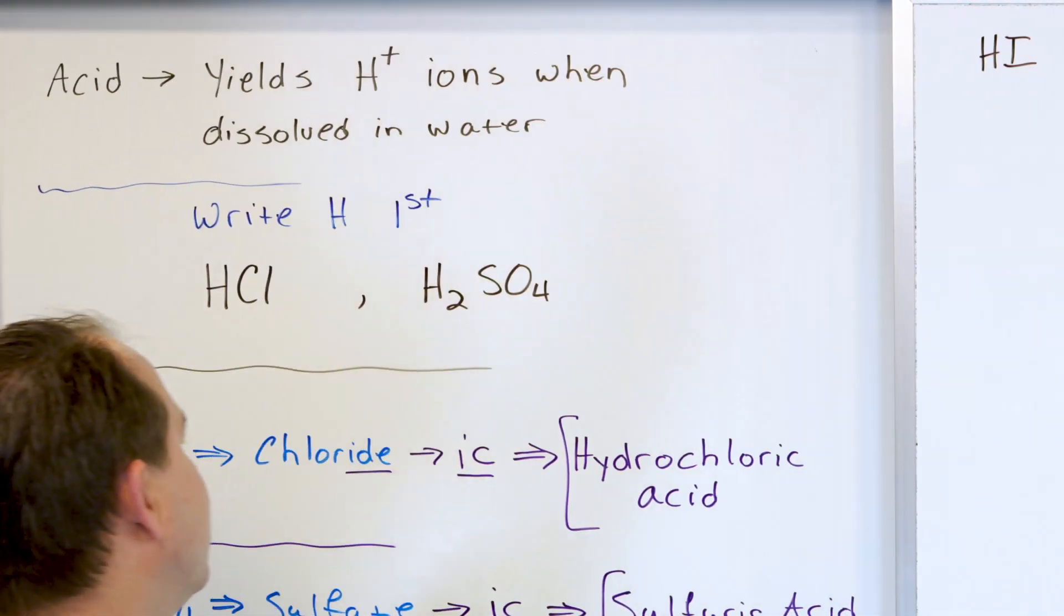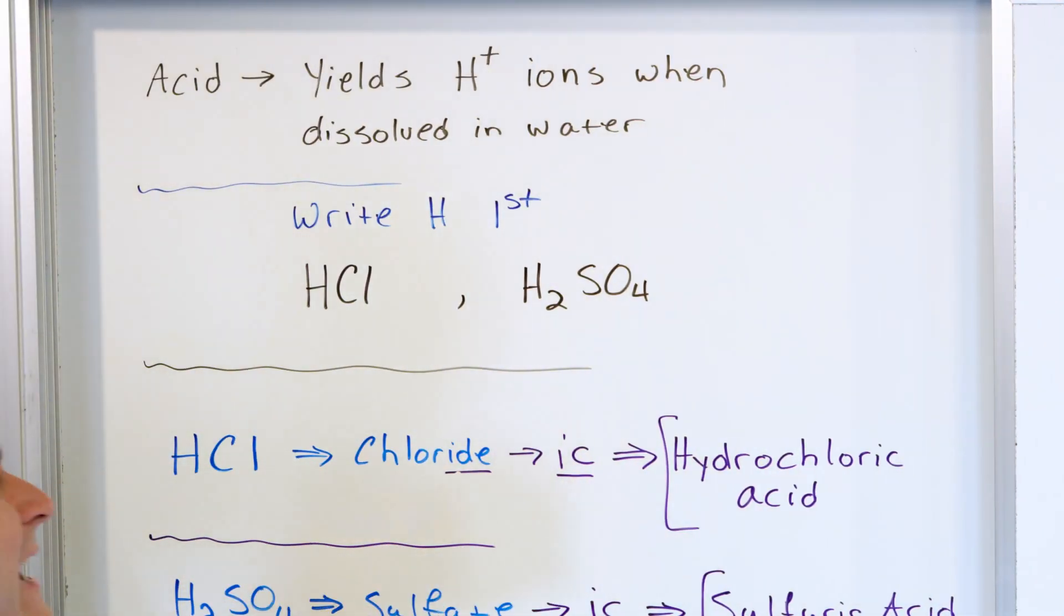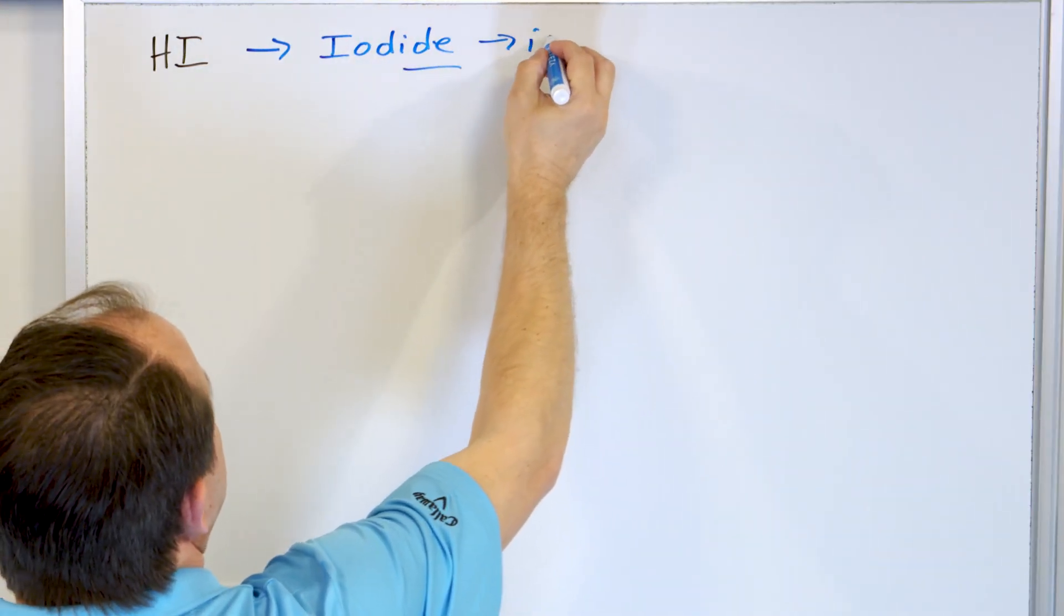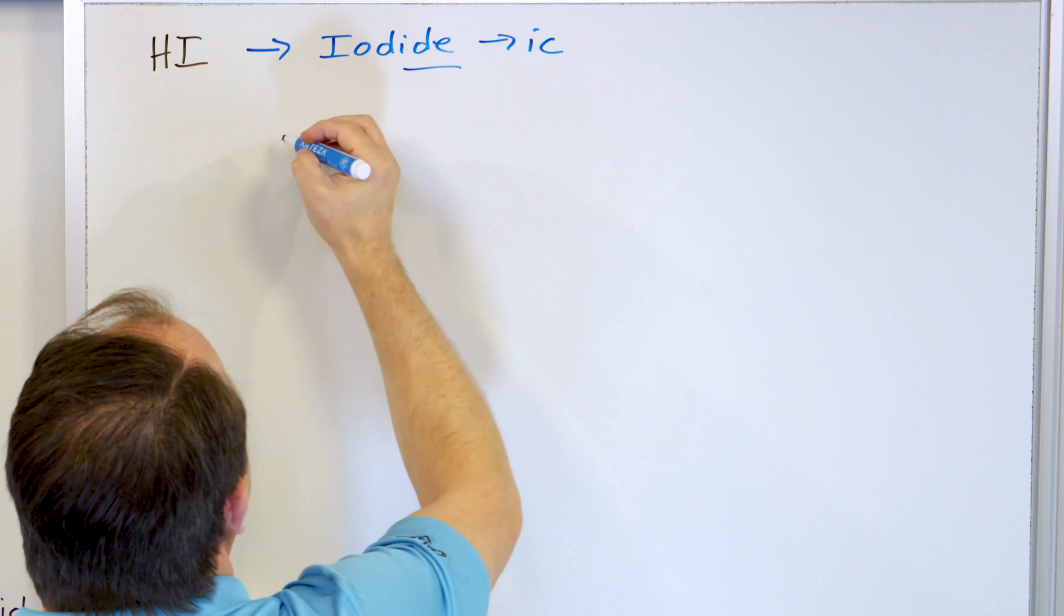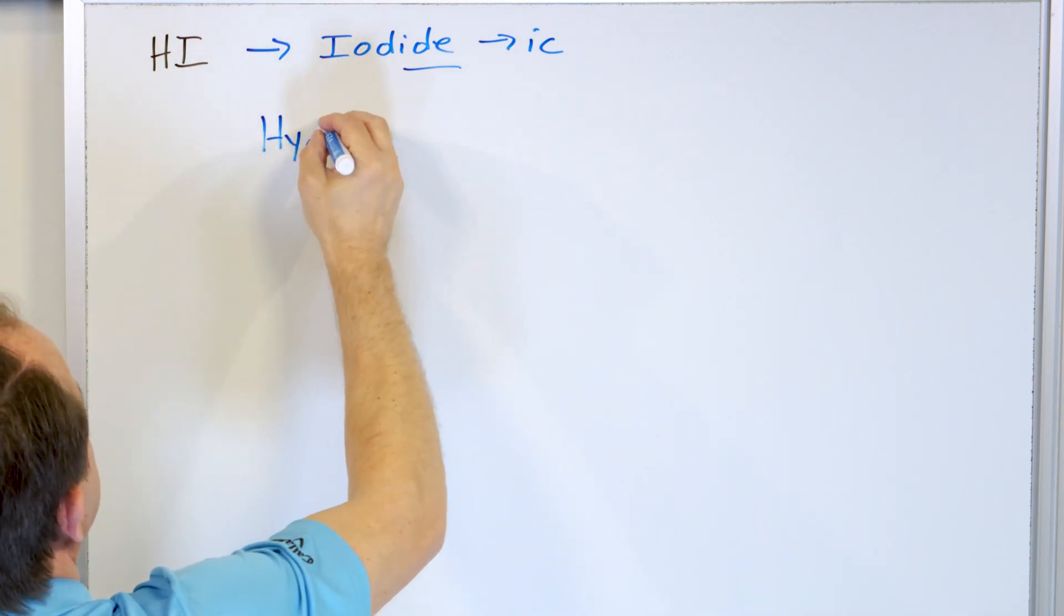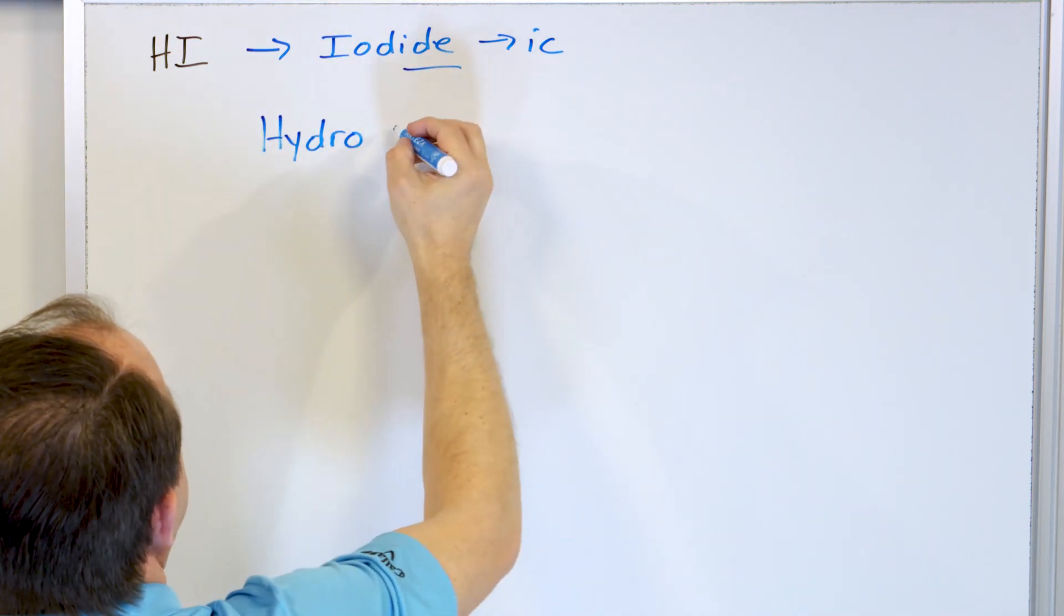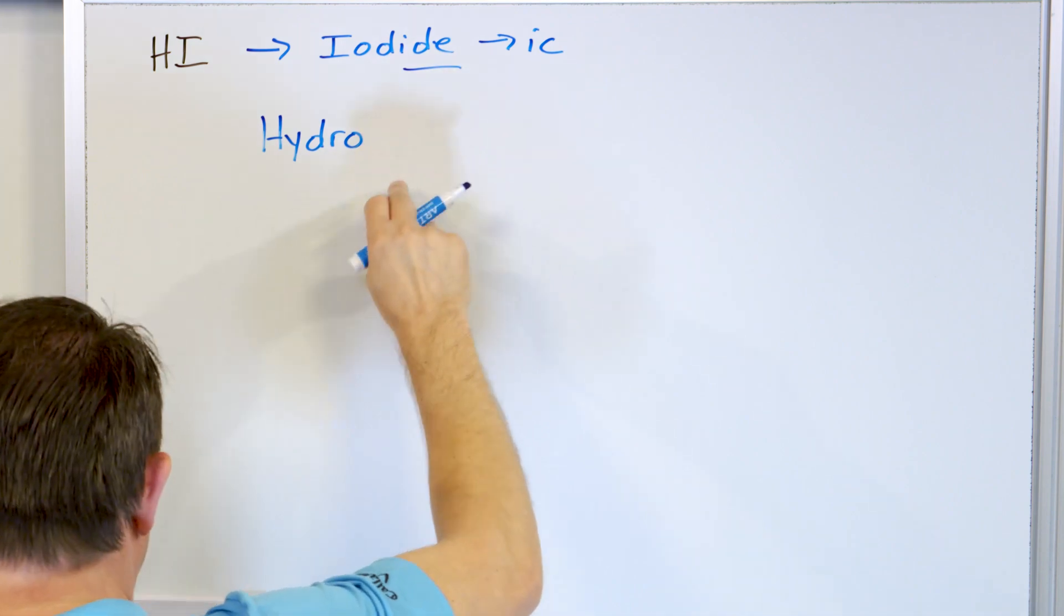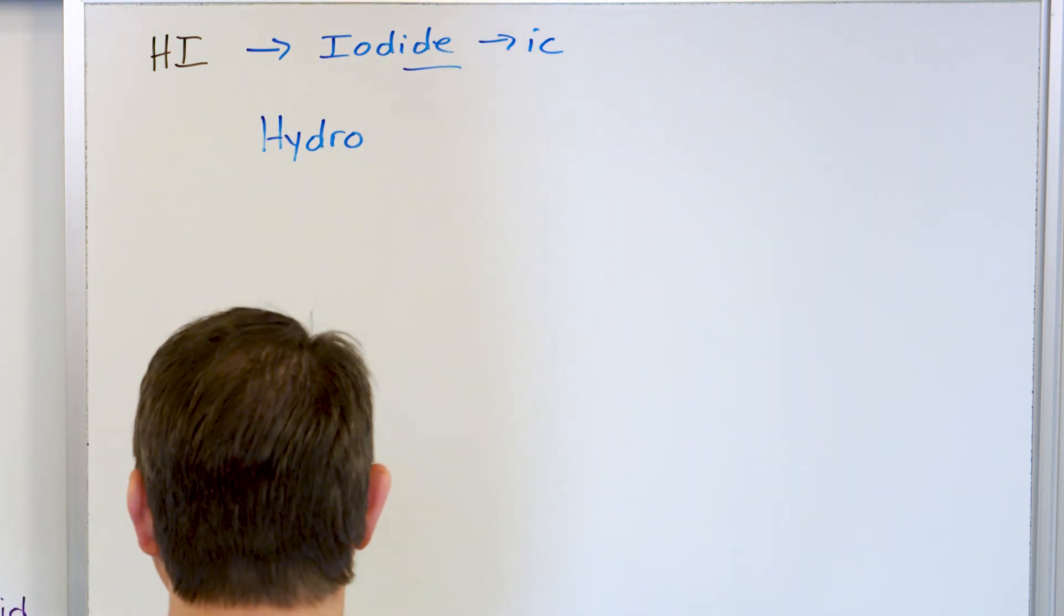And according to our rule, the IDE just gets changed to an IC. So this gets changed into an IC, and you put hydro in front, and so what we get is hydroiodic acid.